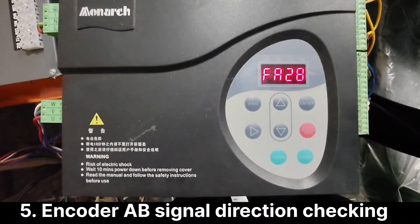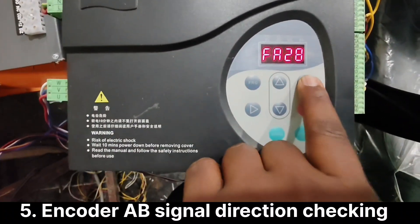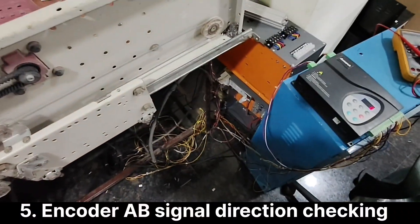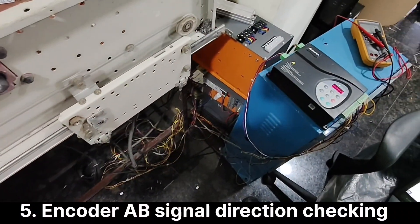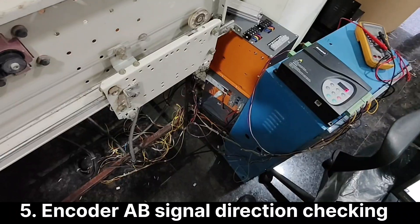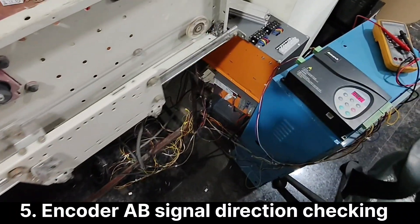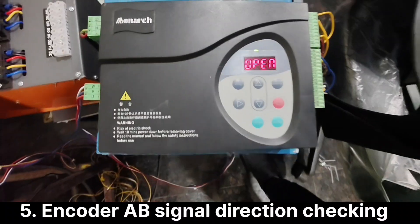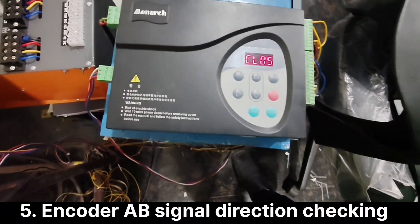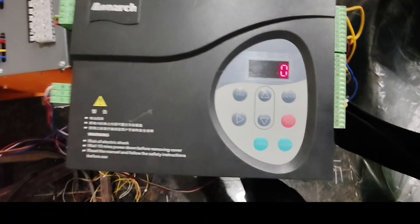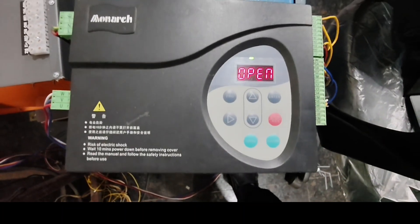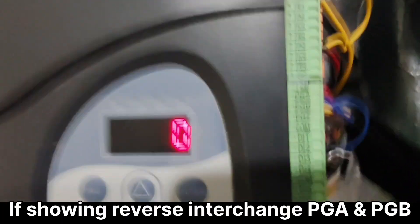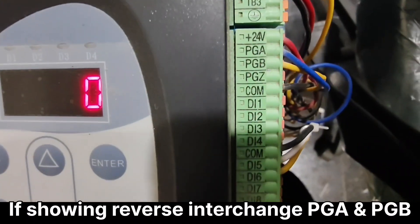For encoder direction FA28, when we open the door, display should show open. When we close the door, display should show close. If it's showing the opposite, then interchange the PGA and PGB signals.